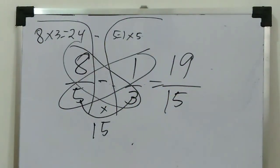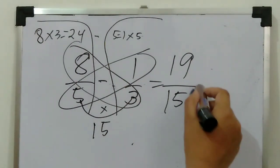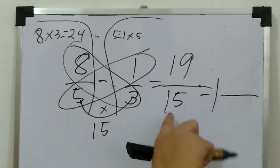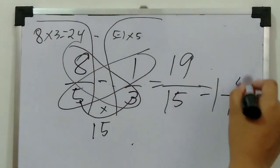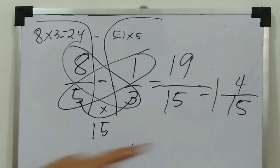That is an improper fraction, so therefore change into mixed number. How to change? Divide. Nineteen divided by fifteen, the answer is one. Copy the denominator, which is fifteen. Then the numerator is four. Why four? Because four is the remainder. Let's check: fifteen times one equals fifteen, plus four equals nineteen over fifteen.